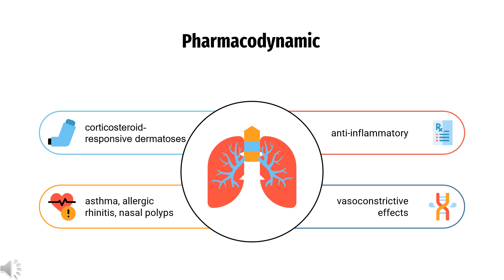Beclomethasone dipropionate is reported to exhibit potent topical activity while possessing low systemic effects. It is a corticosteroid drug with anti-inflammatory and vasoconstrictive effects used to treat chronic inflammatory processes such as asthma, allergic rhinitis, and corticosteroid-responsive dermatosis. When inhaled, it improves lung function, decreases airway hyperreactivity, and reduces the severity of asthmatic symptoms.